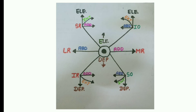The superior rectus: its primary action is elevation, secondary action is intorsion, and tertiary action is adduction toward the nose. The inferior rectus: its primary action is depression, secondary action is extorsion, and tertiary action is adduction. The superior oblique: its primary action is intorsion, secondary action is depression, and tertiary action is abduction.